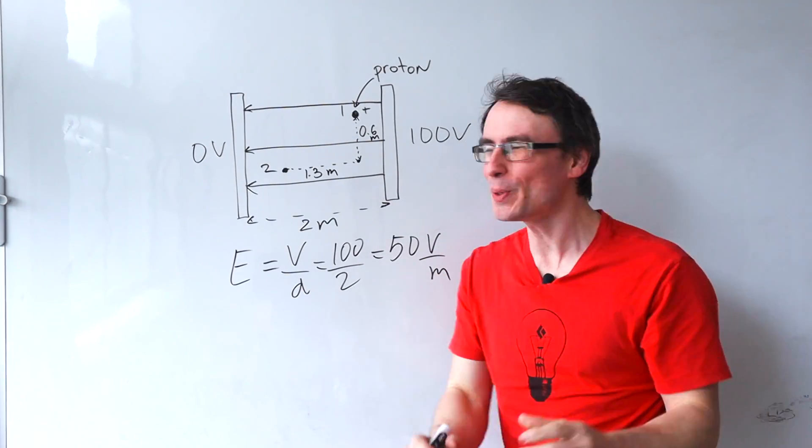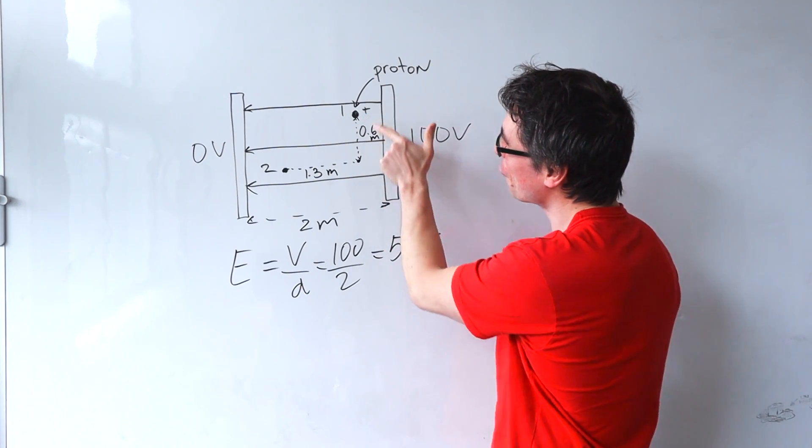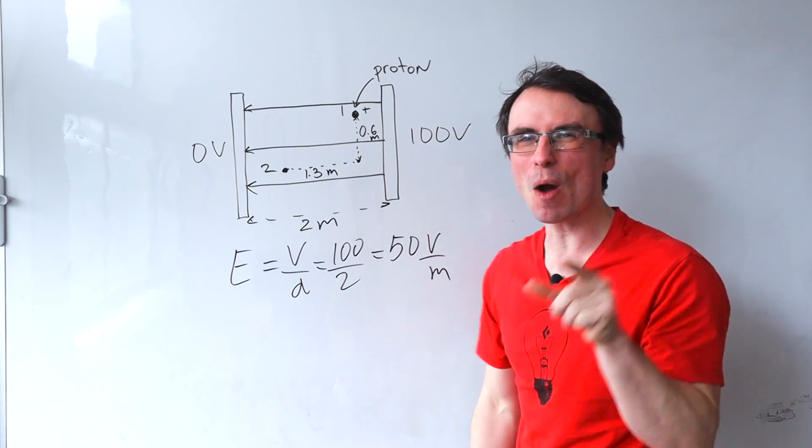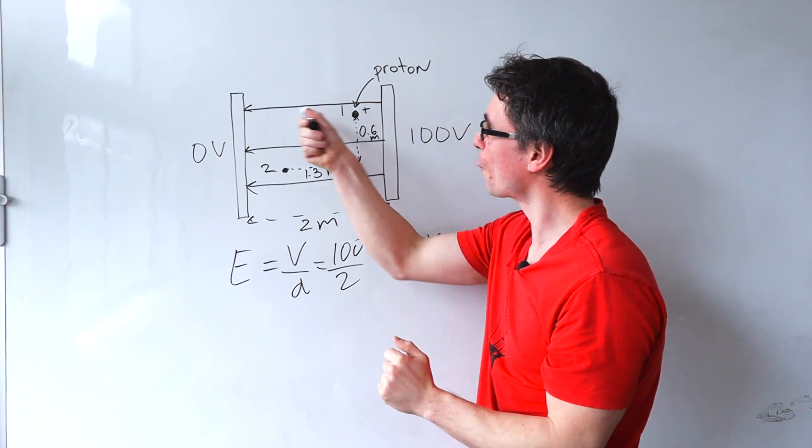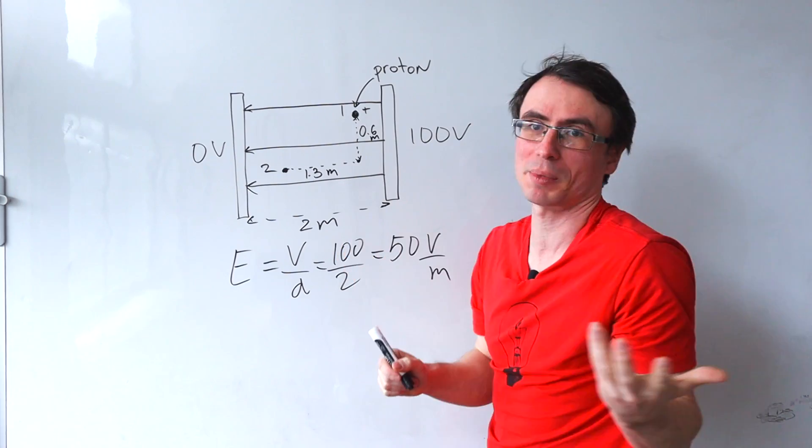The aspect which is really counterintuitive is that this vertical distance here is irrelevant. Now why is that? If I was to release the proton from here it will fly off towards the negative plate and will reach it with some speed.